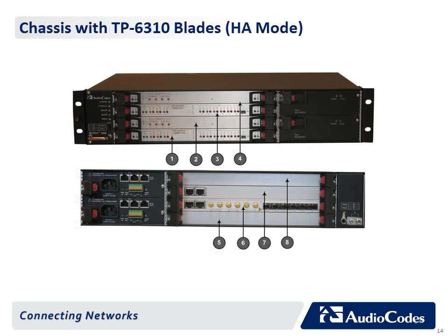The chassis with TP6310 blades in high availability mode hosts the following: (1) Front panel slot 1, active TP6310 blade; (2) Slot 2, active synchronization and alarm blade; (3) Slot 3, standby redundant TP6310 blade; (4) Slot 4, standby redundant TP6310 blade; (5 and 8) blank panels covering unoccupied slots; (6) Rear panel slot 2, RTM6310 providing STM1, OC3 or T3 interfaces and dual GBE interfaces; (7) Slot 3, RTM6310 redundant providing dual GBE interfaces.